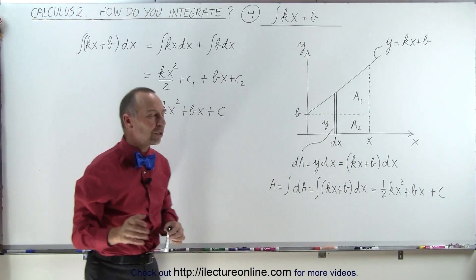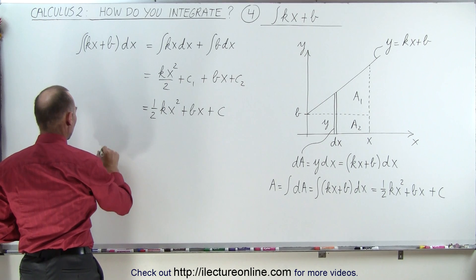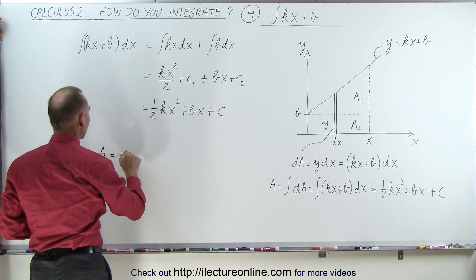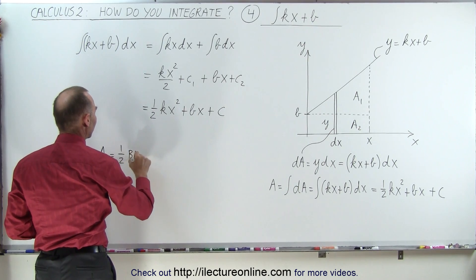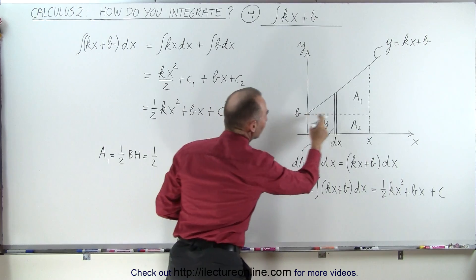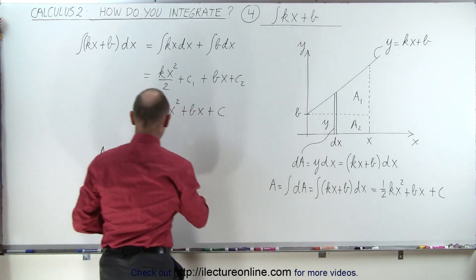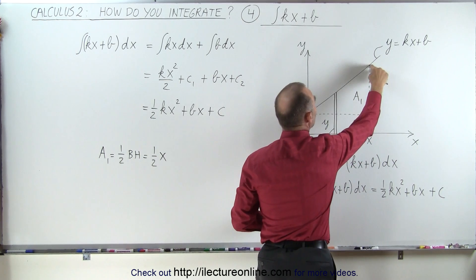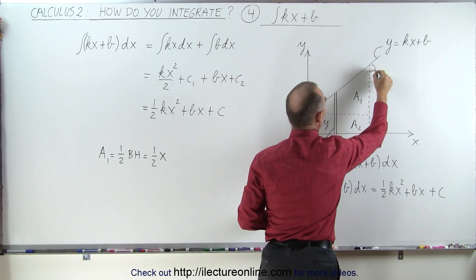But now let's take a look at those two areas. Let's say that area 1 is equal to the area of a triangle, which is one-half the base times the height, which is one-half times the base would be the distance from there to there, which is x, and the height would be the distance from here to here.